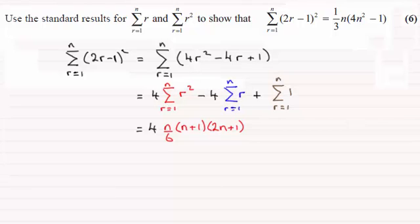Then we come to the next term which is minus 4 times, and sigma r going from 1 to n is (n/2)(n+1). Now this last one, you're summing 1 n times over - 1 plus 1 plus 1 n times - so it's just going to be plus n.